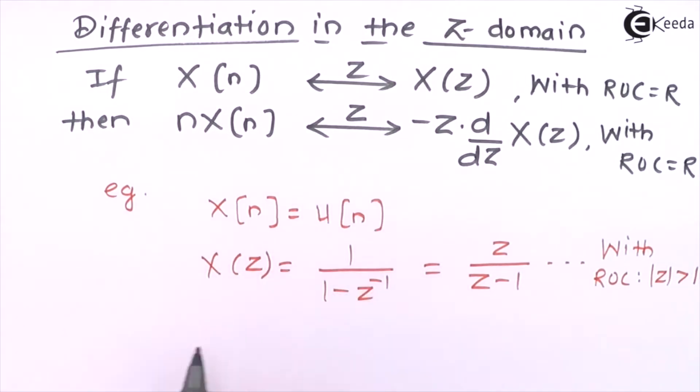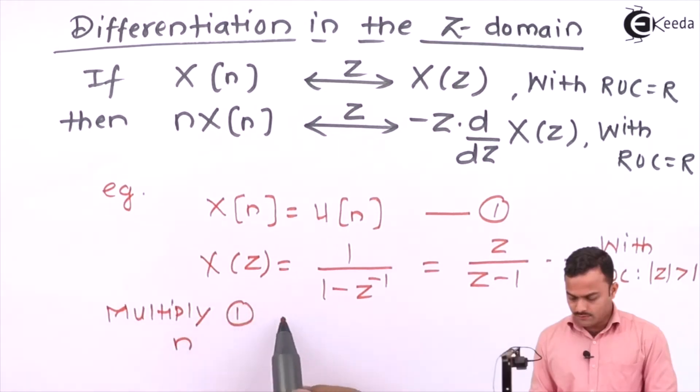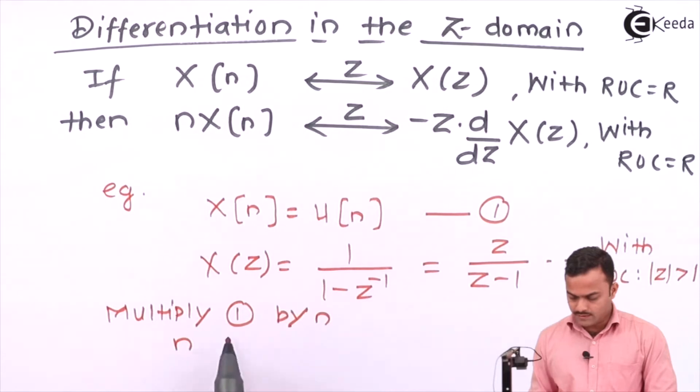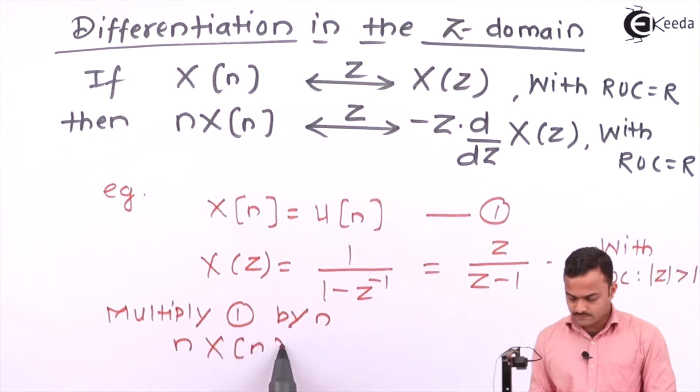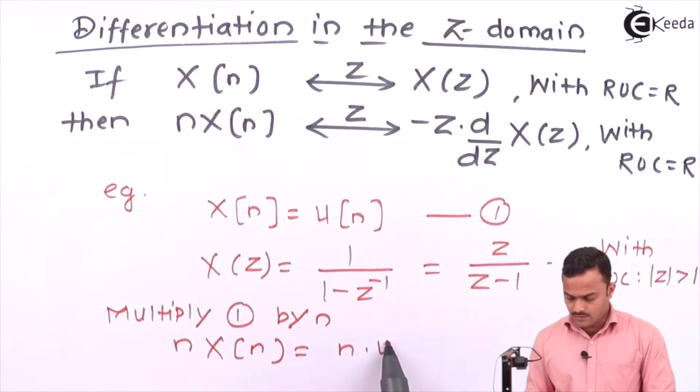Now to this signal, if I multiply with n, I will get nX(n). So multiply u(n) by n, we will get nu(n).